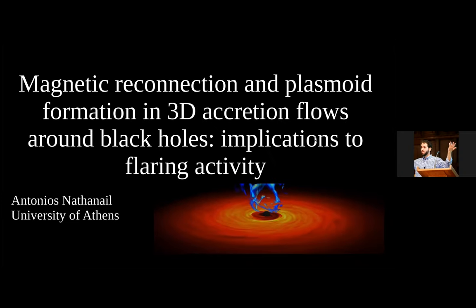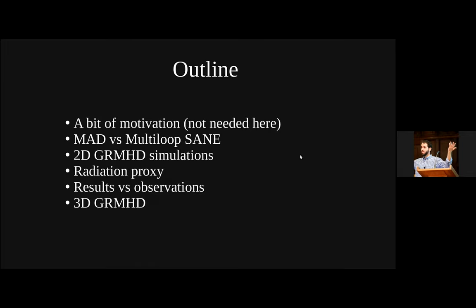Antonio discusses magnetic reconnection in 3D accretion flows around black holes with a focus on Sagittarius A*. He will stress similarities and differences between the MAD configuration — usually used to explain M87 and Sgr A* — and what he calls a multi-loop SANE simulation. The outline covers motivation, differences between MAD and multi-loop SANE, 2D GRMHD simulations with radiation providing first results comparable to observations, and 3D GRMHD simulations.